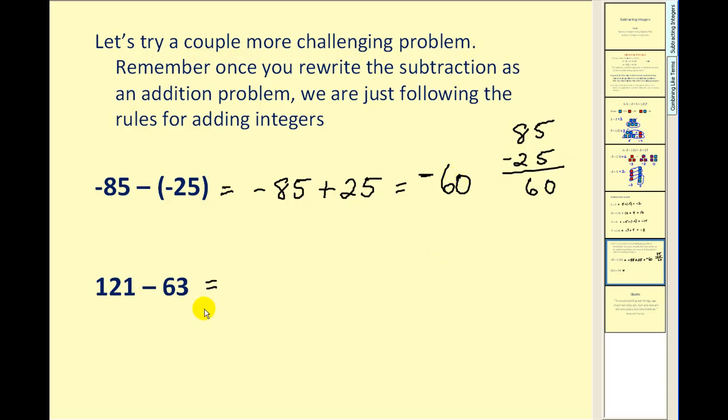This last problem is a prime example of where it may not benefit us to rewrite this as an addition problem. We all know how to perform 121 minus 63. We know our answer will be 58.